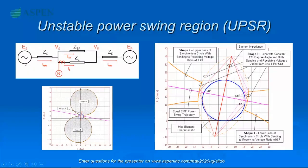PRC-26 defines these two circles forming a dumbbell, and on the right-hand side you see a magnification. There's a very detailed derivation of how those shapes work, but in short: your relay trip setting should not be encroaching outside of this dumbbell shape. If the apparent impedance appears inside the dumbbell, that represents — per PRC-26 — an unstable power swing, and you can and must trip. But if it's outside, your relay should not be tripping.